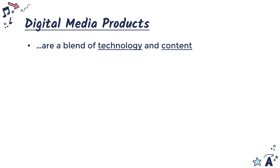It's quite a short definition to be fair. Digital media products are a blend of both technology and content. As someone who is going to be creating digital media products, you need to be thinking about both what technology you can utilize and how that is going to be most effective at communicating your content. Certain jobs think about just technology — a software engineer or systems engineer thinks only about technology. If you're purely in a creative industry, maybe a writer, you might only be thinking about content, but here we're in a unique situation where you have to think about both.